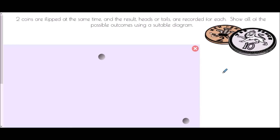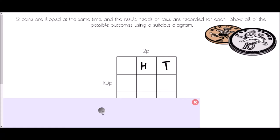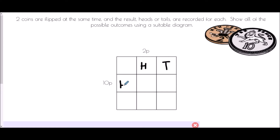Another common idea would be flipping coins. If two coins are flipped at the same time and the results recorded — either heads or tails for each — we show them in a diagram. The 2p coin could get a head or a tail, so we need a column for head and a column for tail. With the 10p, exactly the same thing. Now we need to think about the combinations. Because these are letters representing heads and tails, we just write the two letters combined: heads-heads, heads-tails, tails-heads, or tails-tails.